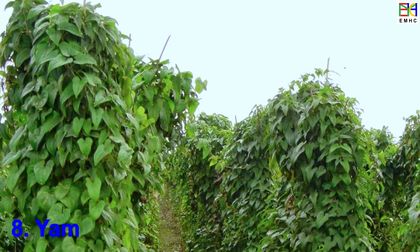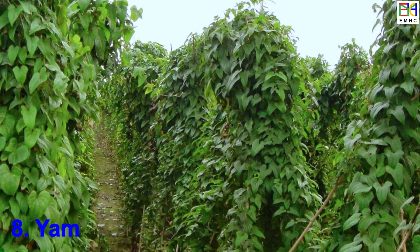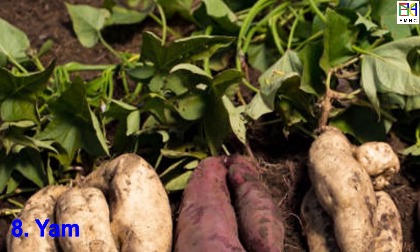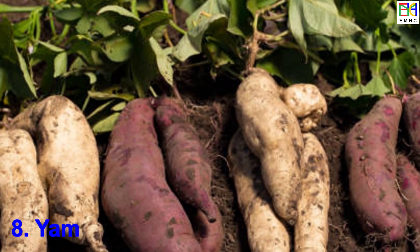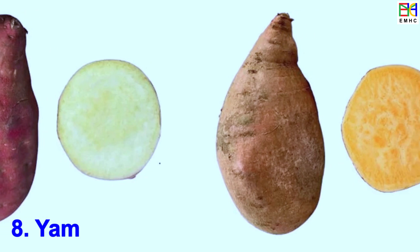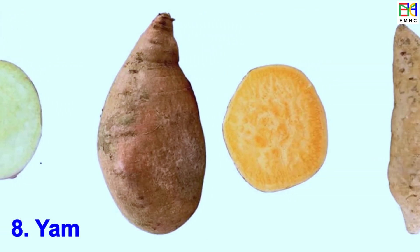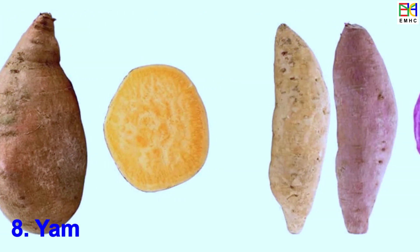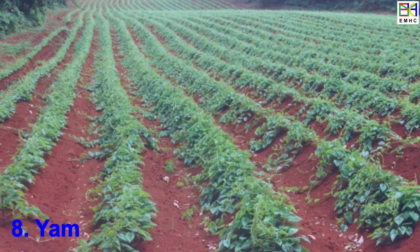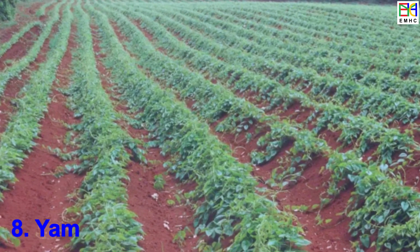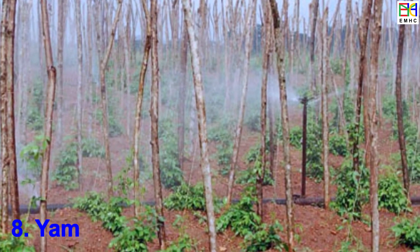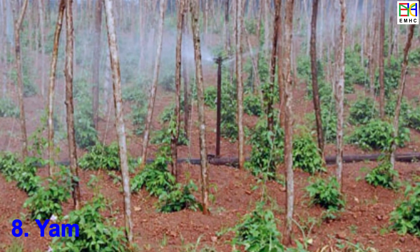Yam is a tropical underground tuberous root vegetable with a cylindrical or bulbous shape, varying in size from small to large. It has a rough, bark-like, light brown to dark brown skin. The flesh of yam varieties is starchy and can be white, yellow, or purple. Yam undergoes growth stages, including planting sprouts or tubers, vegetative growth, flowering, and tuber formation.